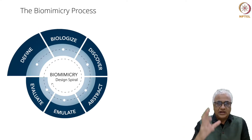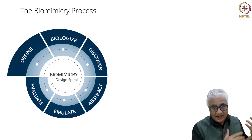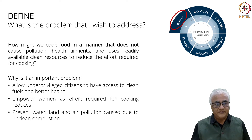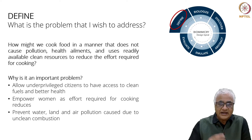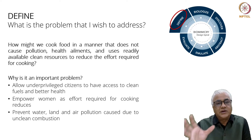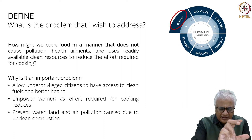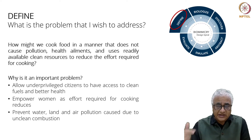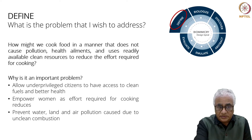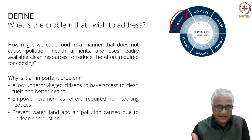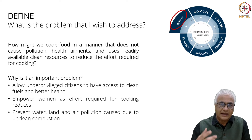This is the spiral. With the confidence of the spiral in the background, Ishan chooses his problem. He chooses a very different sort of problem: how might we cook food in a manner that does not cause pollution, health ailments, and uses readily available clean resources? Please pause this video and read the problem very well. The purpose of today is just to take you through the process.